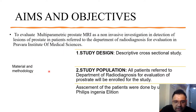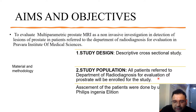Materials and methodology include a descriptive cross-sectional study design. The study population was all patients referred to the department of radio diagnosis for evaluation of the prostate. Assessment was done using the Philips Ingenia Elition machine, which is a 3 Tesla MRI machine.